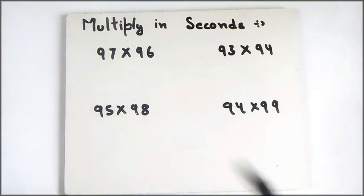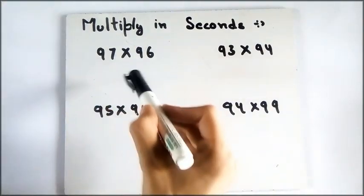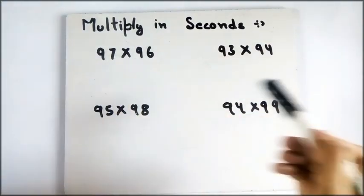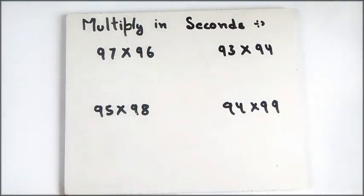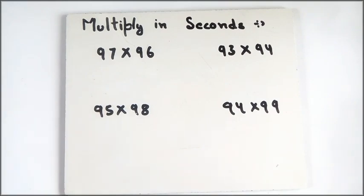This video is about multiplying two-digit numbers near 100 very fast using Vedic math. You can use this trick to calculate fast in exams — it is a very amazing and really fast trick.